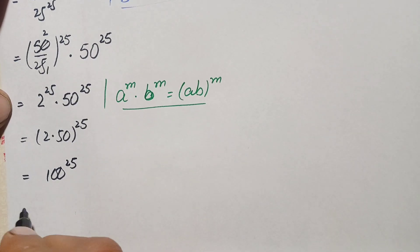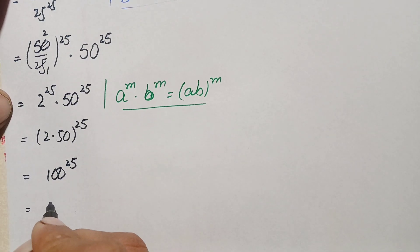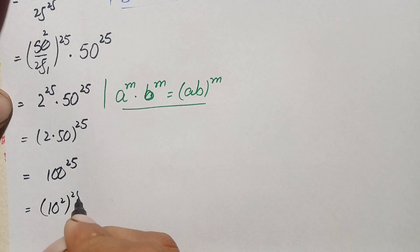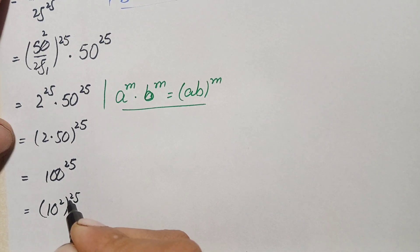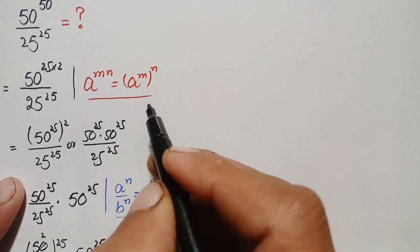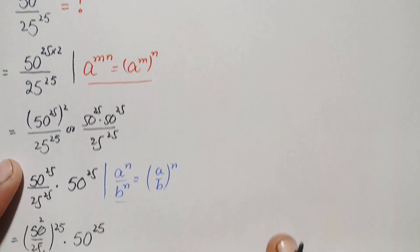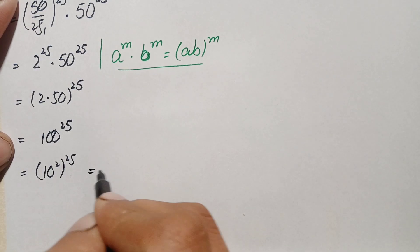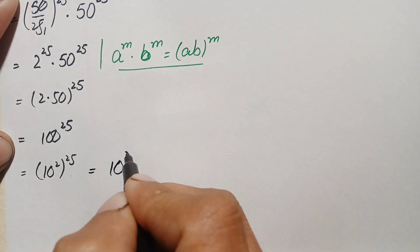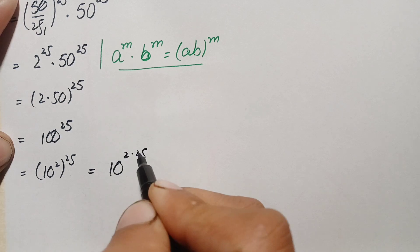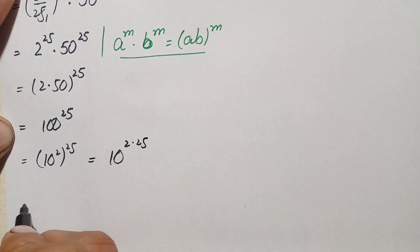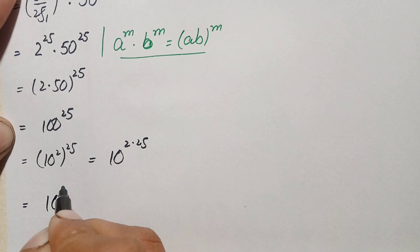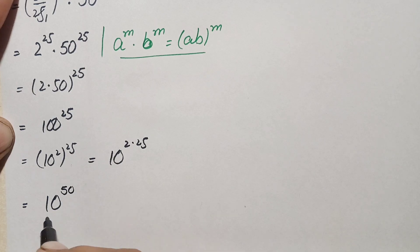We can write 100 in exponential form as 10 squared, all raised to power 25. Using the exponential property, we multiply the powers: 10 raised to power 2 times 25. Two times 25 is 50, so this becomes 10 raised to power 50.